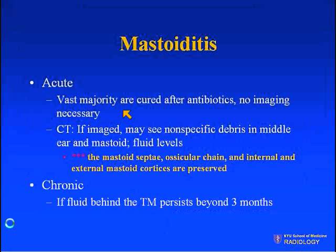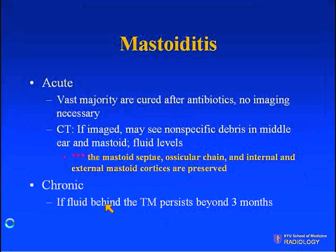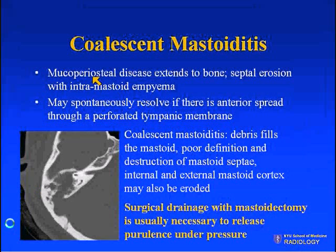For acute mastoiditis, the vast majority are cured after antibiotics, and typically no imaging is necessary. If we do image these patients, we may see nonspecific debris in the middle ear and mastoid and fluid levels. The key is that the mastoid septa, the ossicular chains, and the internal and external mastoid cortices are typically preserved. If patients are chronic, the ENT surgeon or pediatrician will see persistent fluid behind the tympanic membrane after three months. Coalescent mastoiditis is mucoperiosteal disease which extends to bone, with septal erosions and intramastoid empyema — which may still spontaneously resolve if there is anterior spread through a perforated tympanic membrane.